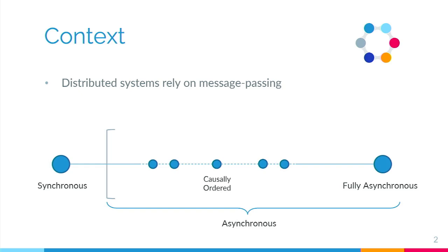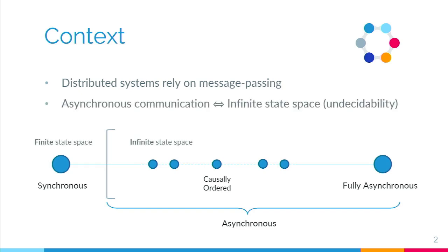After a message is sent, it might be received indefinitely later. A process can send a message and doesn't have to wait for that message to be received to continue its other operations. Between synchronous and fully asynchronous communication, we also have other variants, including causally ordered communications, all falling under the umbrella term of asynchronous communication. As long as we use synchronous communication, we have a finite state space, which means we can use finite state automata to model our system. Most interesting properties, such as reachability of a state, are decidable. However, as soon as we move into the asynchronous world, we encounter an infinite state space.